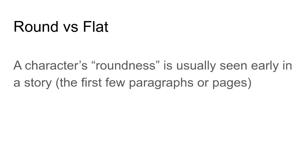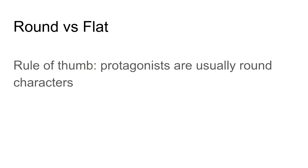In The Story of an Hour, we learn in the first sentence that Louise has heart trouble — which takes on multiple dimensions throughout the story. A little later we learn she is young with a fair face yet looks like she's gone through tough times. That's not much to go on, but for such a short story it's enough to establish Louise Mallard as a round character.